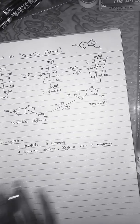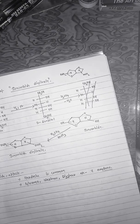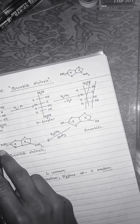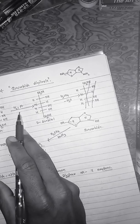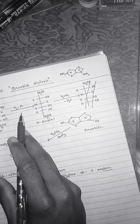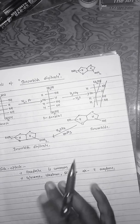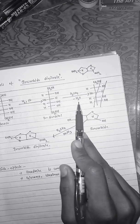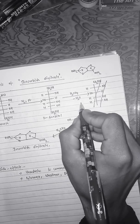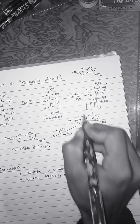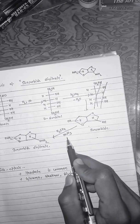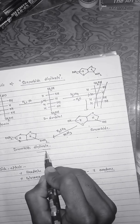Now we are talking about the synthesis of isosorbide dinitrate. Glucose in the presence of hydrogen and platinum is converted into D-sorbitol. D-sorbitol in the presence of sulfuric acid and water is converted into isosorbide. Isosorbide in the presence of H2SO4 and HNO3 finally forms isosorbide dinitrate.